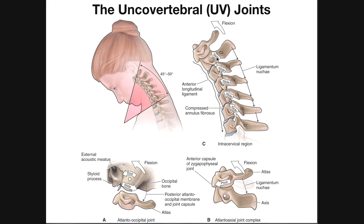We also see two other things in upsloping. One: because these cervical vertebrae are translating forward relative to the vertebra below, we actually see the annulus fibrosus slightly compressed. What we also see is that the zygapophyseal joint posteriorly actually has some stress taken off of it — the two articulating surfaces actually come apart a little bit, relieving stress or decompressing the zygapophyseal joint.